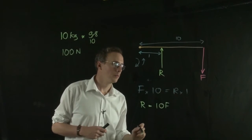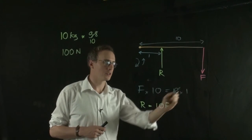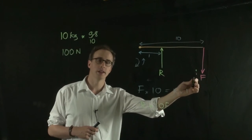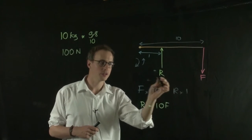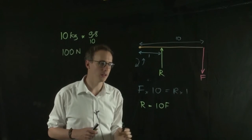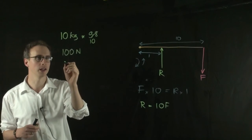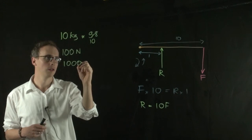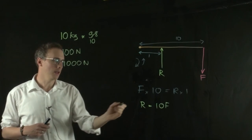So if we suspend 10 kilograms onto the end of the lever arm, that's 100 newtons, and that's actually putting 1,000 newtons or a kilonewton into our sample.